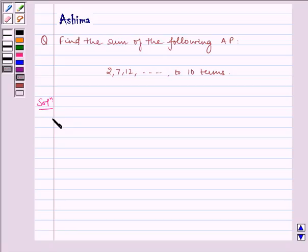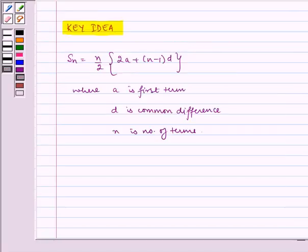Now before writing the solution let us look at the key idea. The key idea to this problem is Sn equals n by 2 multiplied by 2a plus n minus 1 times d, where a is the first term, d is the common difference, and n is the number of terms.